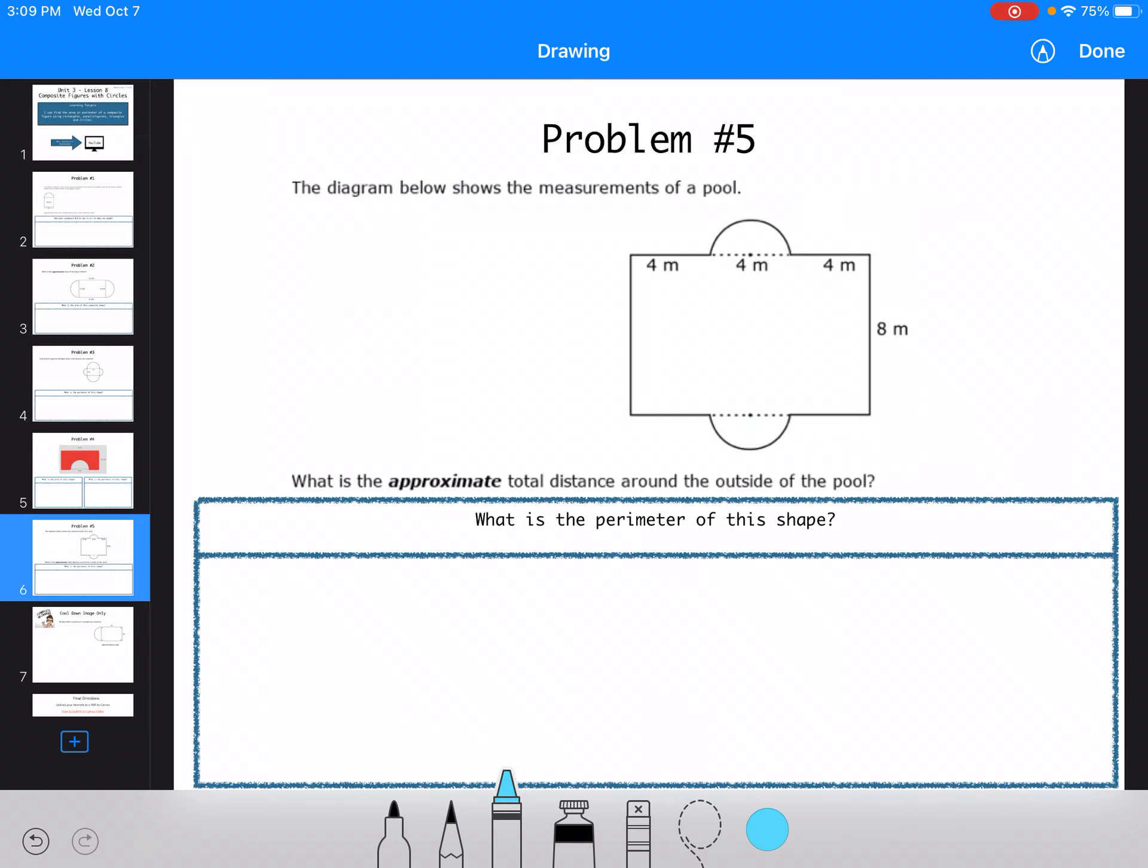So now they want us to find the approximate total distance around the outside of the pool. So I know this is going to be 4. This is going to be 4. So now I have to find the circumference around the outside of the circle. So my diameter is 8. So C equals pi, not 8, 4. So C equals 3.14 times 4, 12.56.